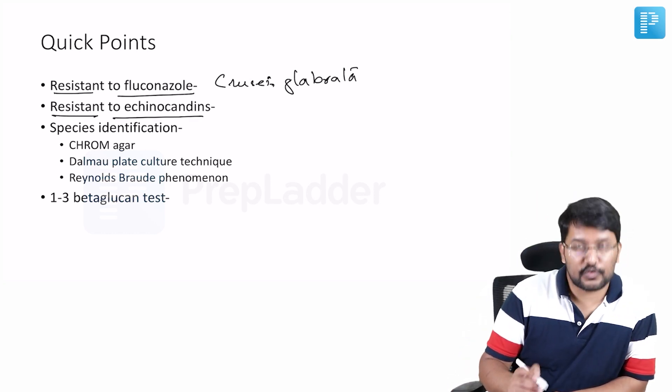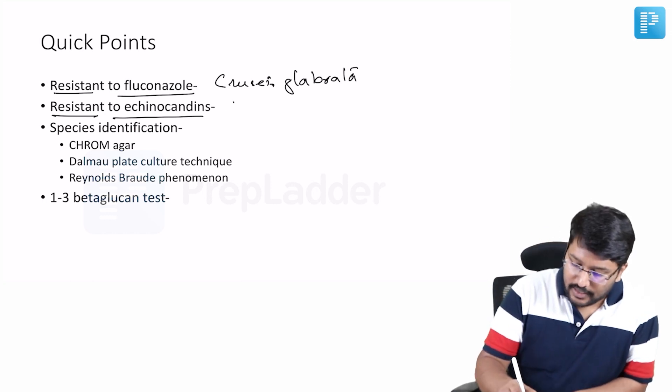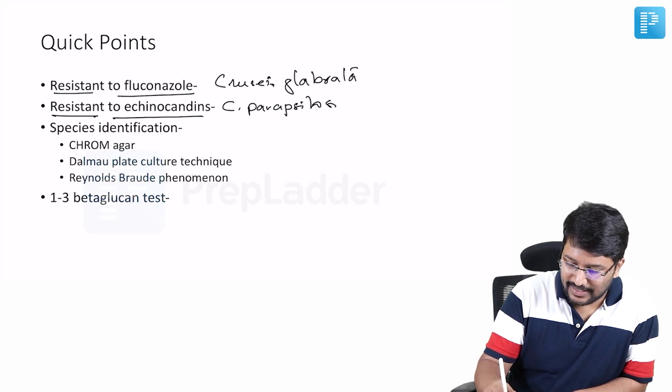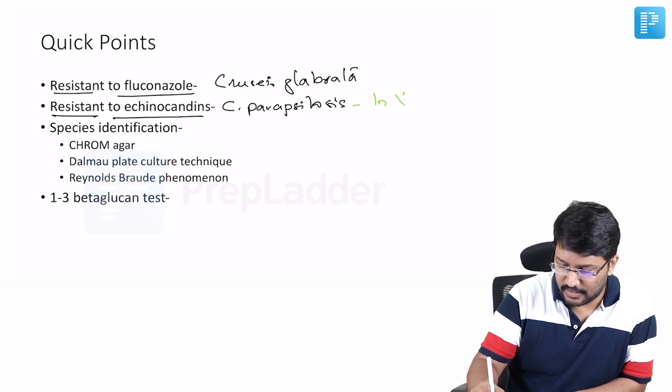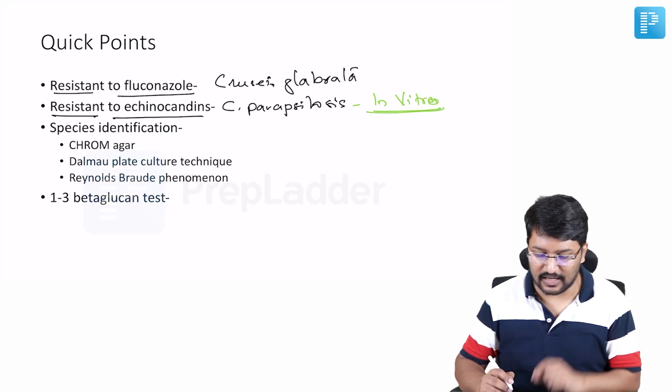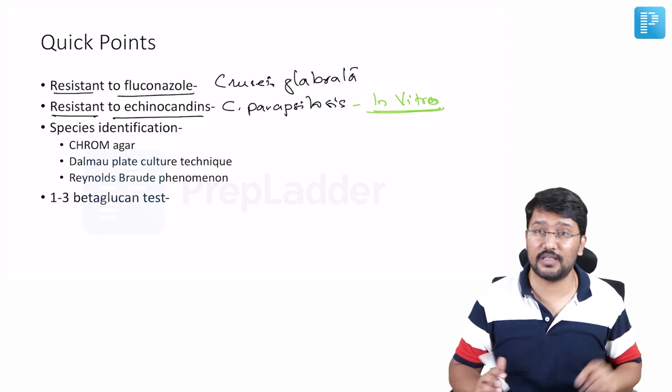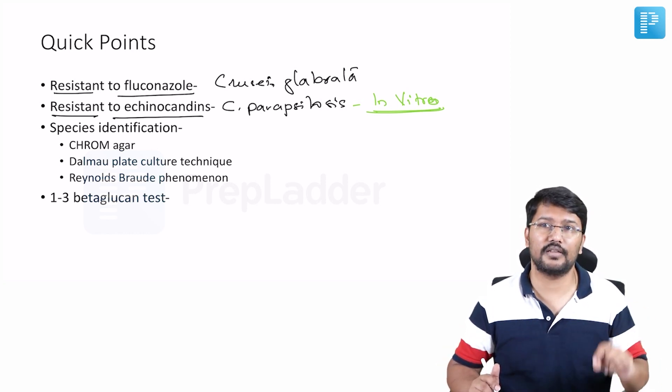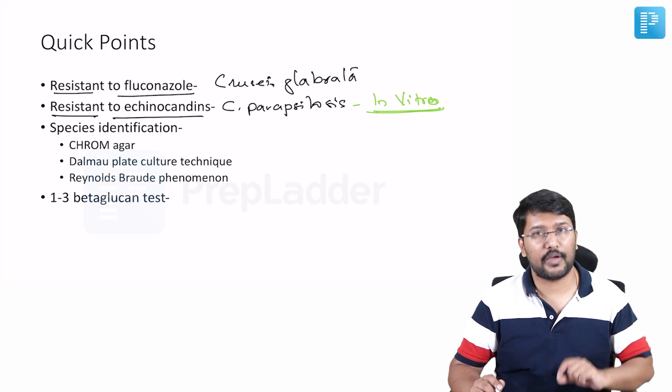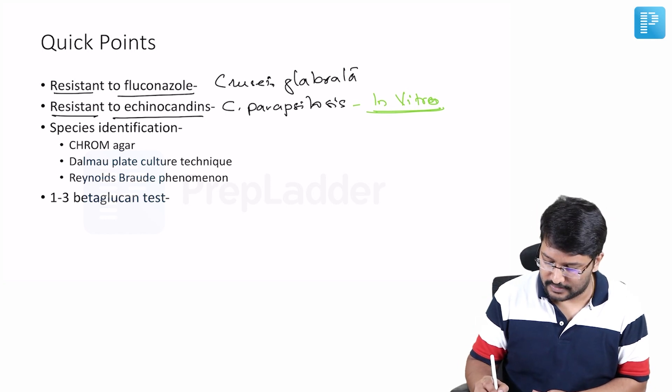Then, echinocandins you know that is the drug of choice whenever we are talking about invasive candidiasis. And Candida parapsilosis has shown in vitro, remember this in vitro, in vivo it is still effective. So in vitro it has shown resistance against echinocandins. So if you get an MCQ which of the following Candida species is resistant to echinocandins, it has to be Candida parapsilosis. Rest of the species are still sensitive.